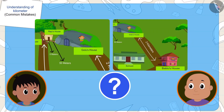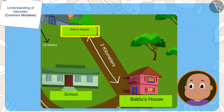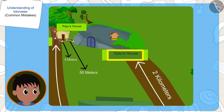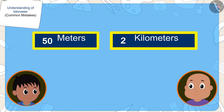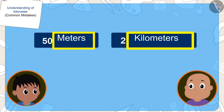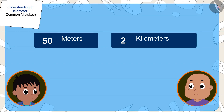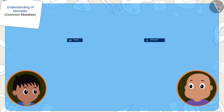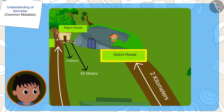Kids, is Bablu correct this time? No — Bablu is wrong again. The number two is less than 50, but once again Bablu did not pay attention to the units when comparing distances. His house is two kilometers from Golu's house and Raju's house is 50 meters from Golu's house. Even though two is less than 50, because a meter is smaller than a kilometer, Raju's house is actually closer to Golu's house.